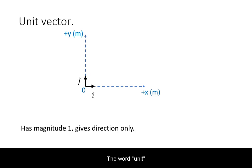The word unit means 1. A unit vector has a magnitude of 1 and it has a direction. Because it is not fixed to a quantity by either magnitude or units, it will give only the direction.